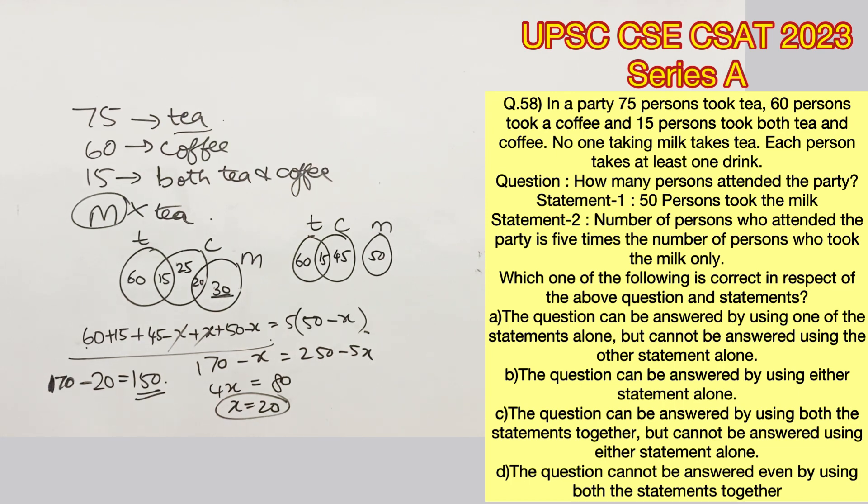So if we assume that the party had only 3 drinks, that is tea, coffee and milk, we will get the answer as option C because both these statements together are sufficient to answer this question.